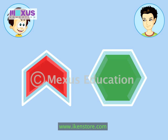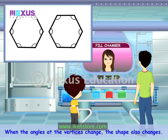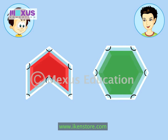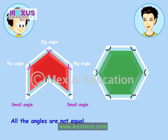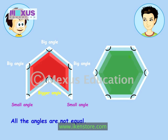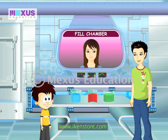Now we have to find the container in which all the angles formed at the vertices are equal. Both these containers have six sides, but their shapes are different — when the angles at the vertices change, the shape changes too. The angles formed on the red container are not equal: there are two small angles, three big angles and one bigger angle. That means the container with the green liquid is the correct one, as all its angles are equal. Let's pour the solution in the cylinder.